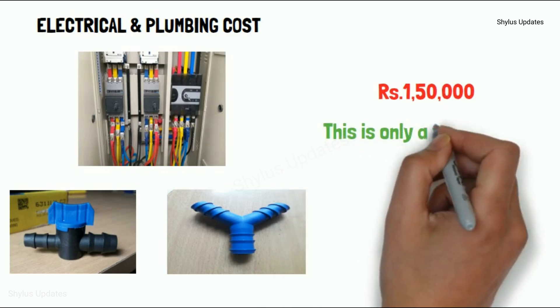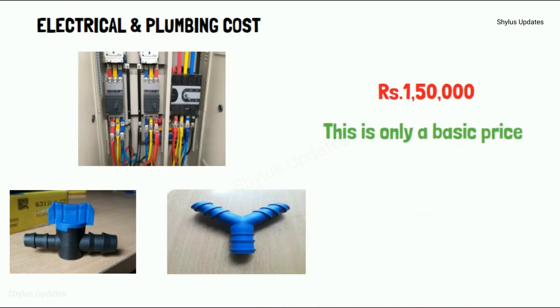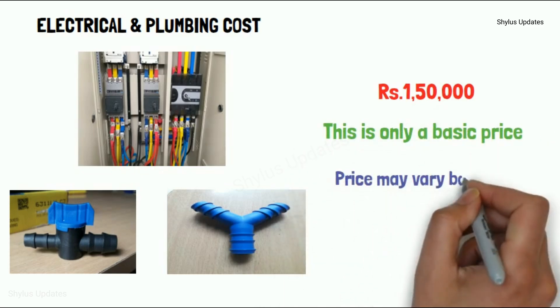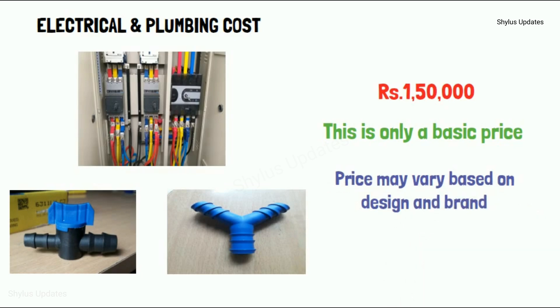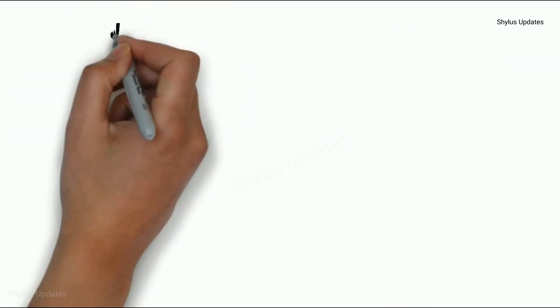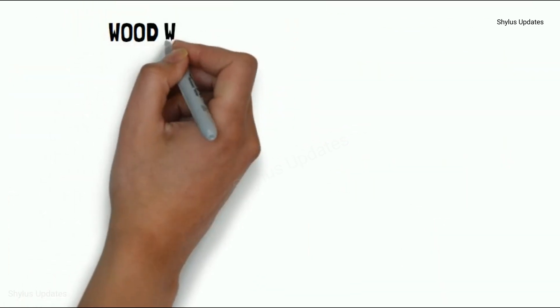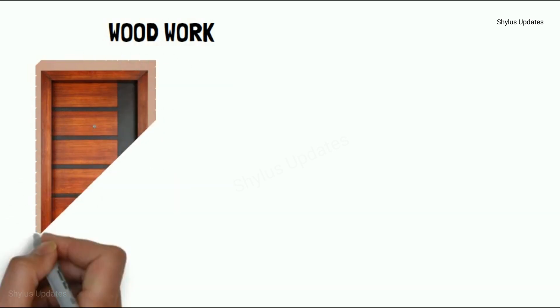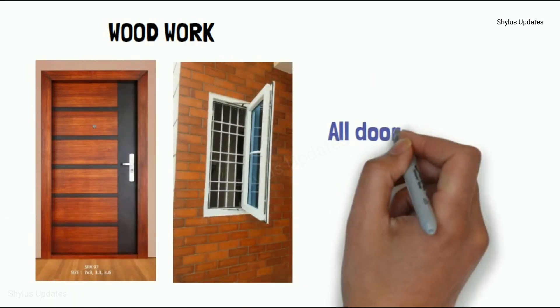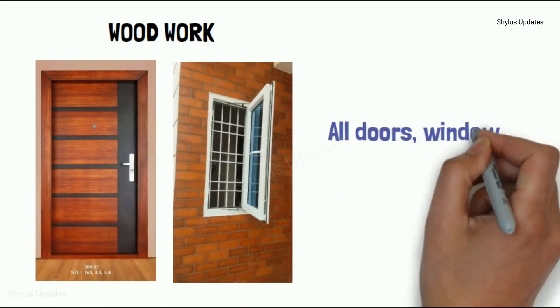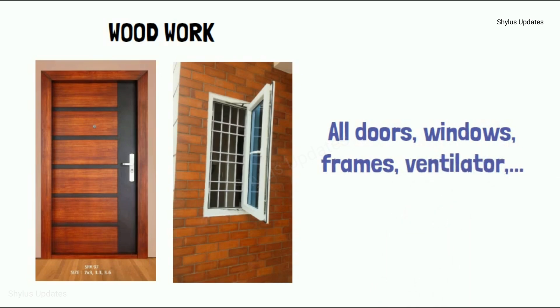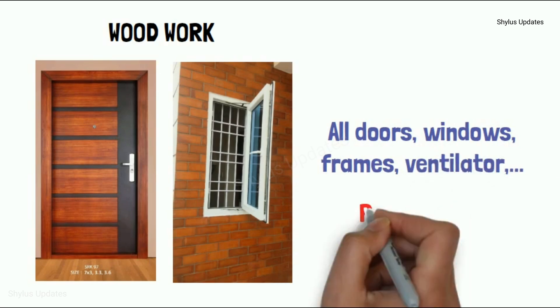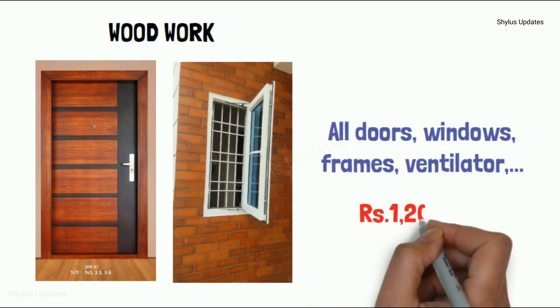For fuel tile, you get Rs. 49,500. All doors, windows, frames, ventilator for 850 sq ft house is Rs. 1,20,000.